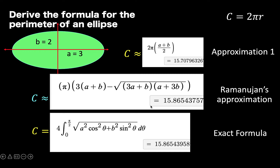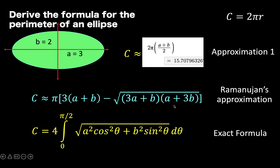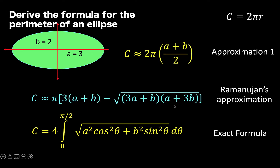Reflecting on this result, I cannot help but admire the genius of Ramanujan. Now, during the time of Kepler, when he was studying planetary movement around the sun, this calculus formula was not yet available, so they were resorting to some approximation.